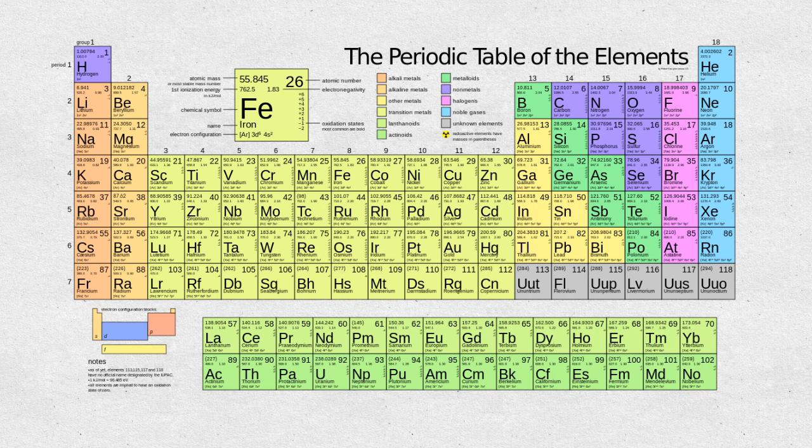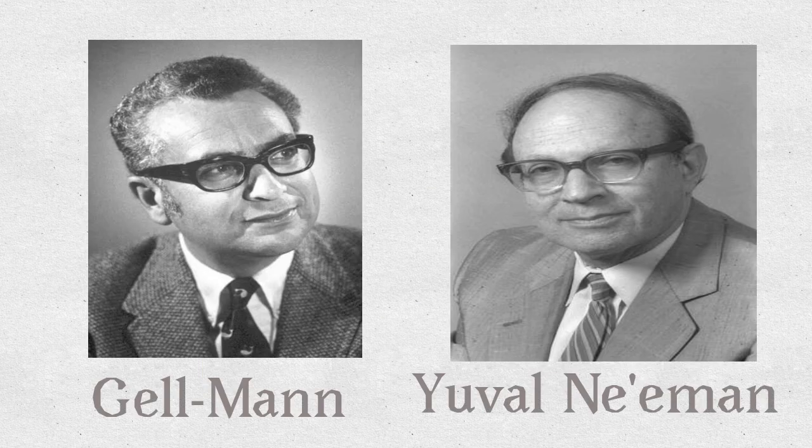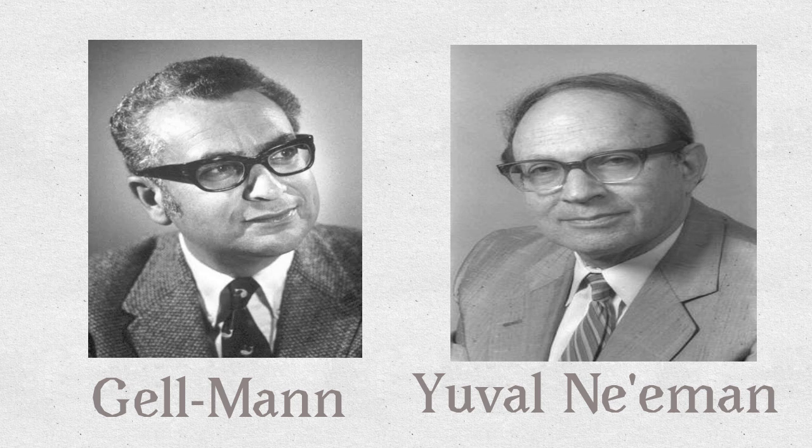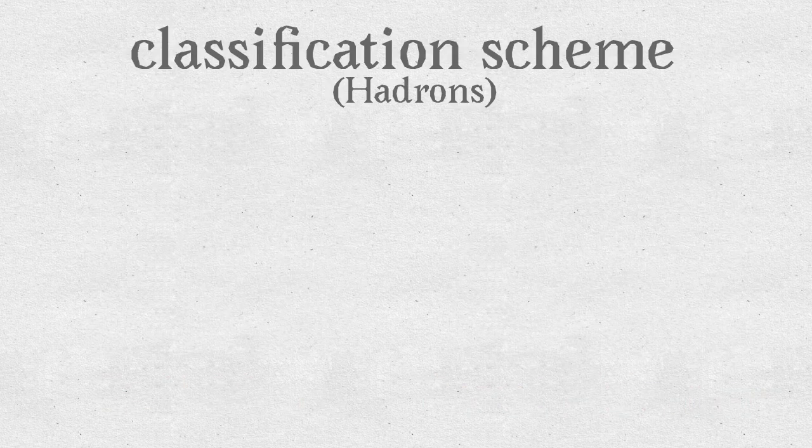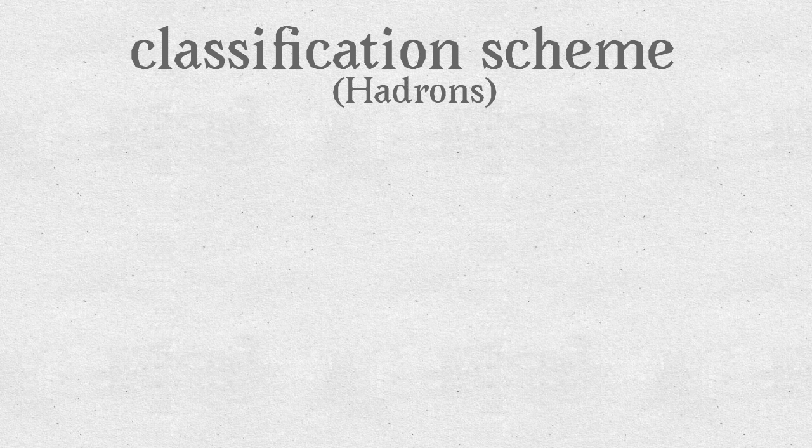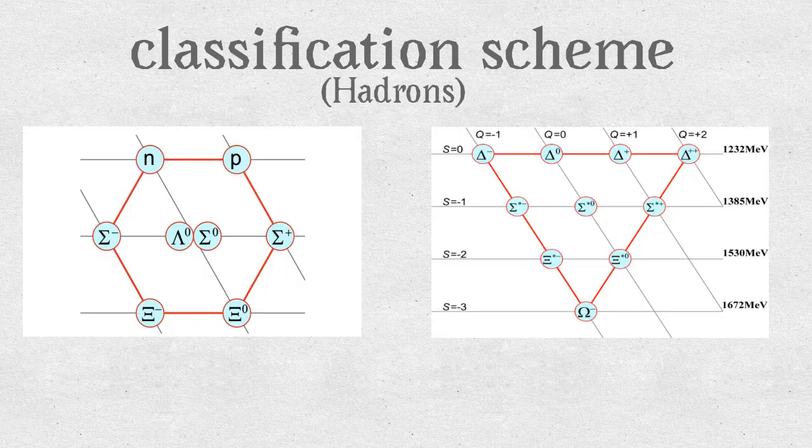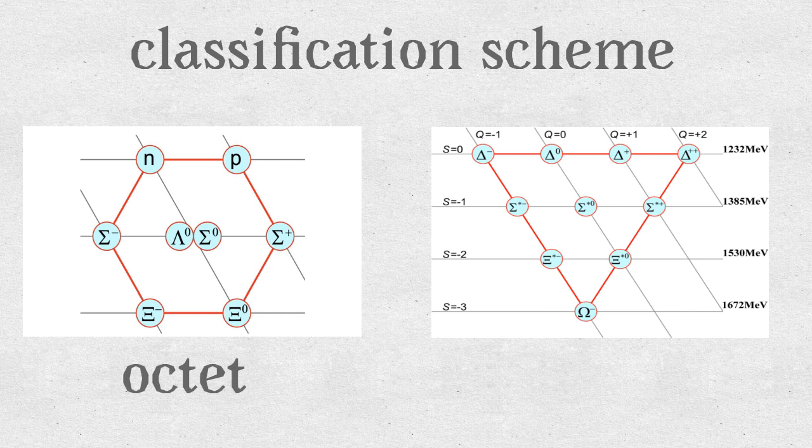And we can classify those elementary particles also. Gell-Mann and, independently, Yuval Ne'eman proposed a classification scheme. They both showed that hadrons can be naturally split into two small families, each consisting of eight or ten particles. They called them octets and decuplets.